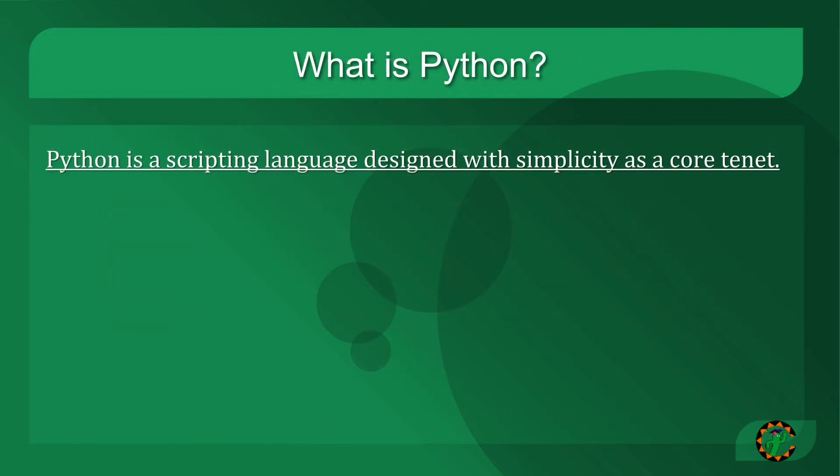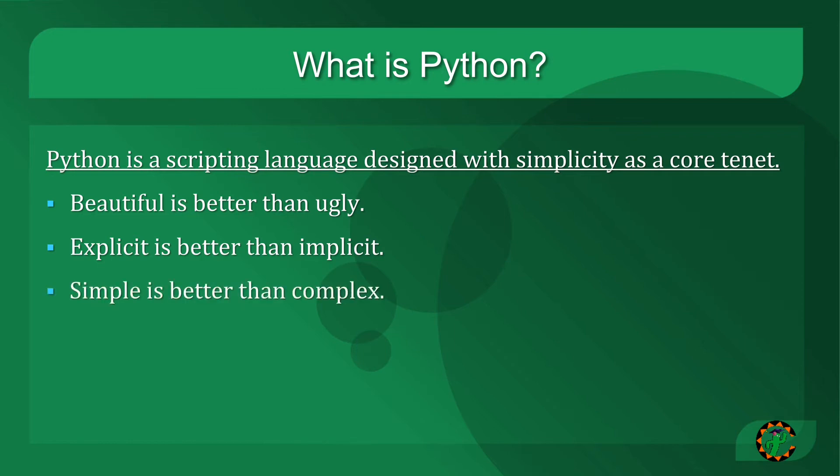The language that we'll be starting with is Python, which is a scripting language specifically designed with simplicity as a core tenant. Among others, these are the features that the Python design aspires to. Beautiful is better than ugly. We should write code that inspires aesthetically. Explicit is better than implicit. If we can make something known, that's better than inferring it. Simple is better than complex. If we have a simple, straightforward way to do something, that is the way we should do it.